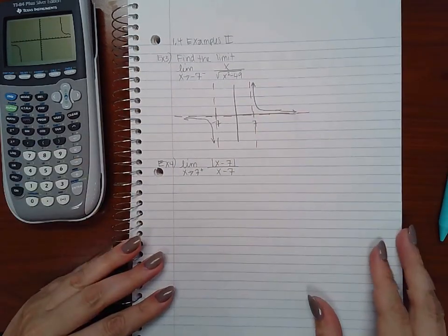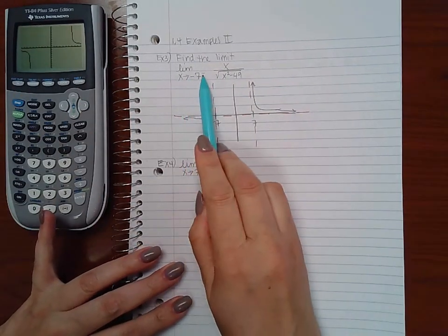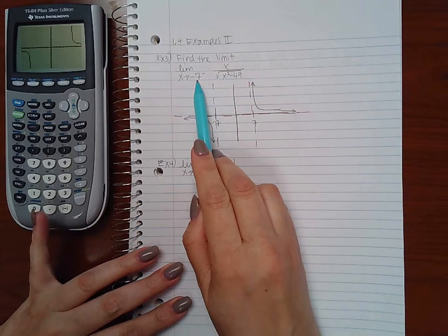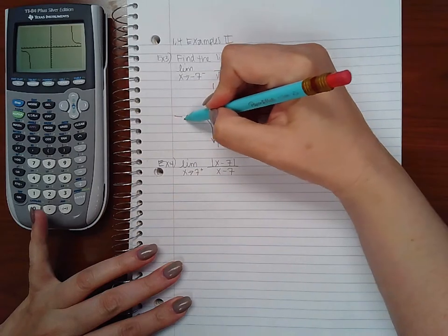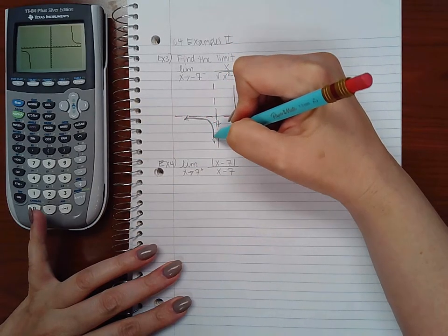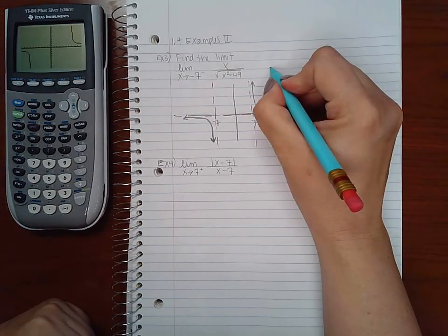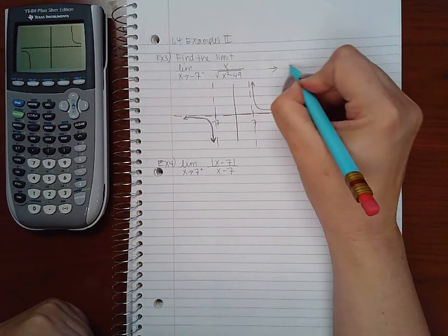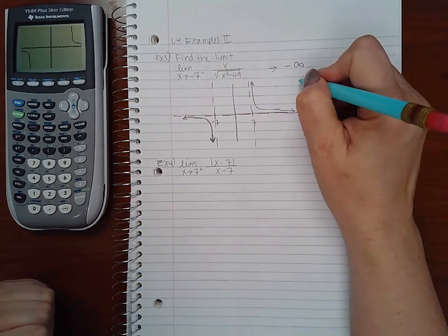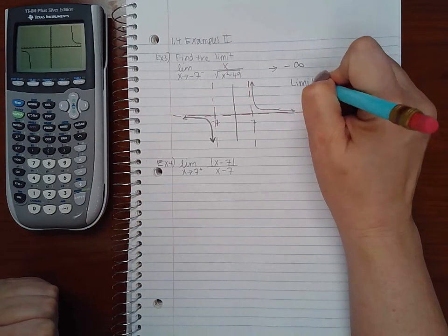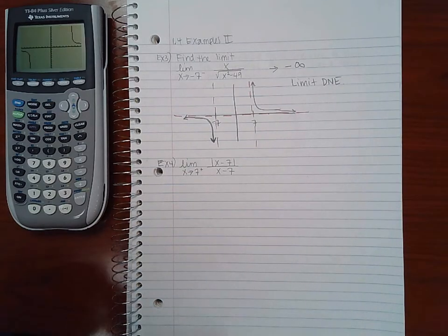That's my graph according to my graphing calculator. So if I'm looking at the limit to the left of negative 7, that means down here. If I'm looking at it here you'll notice that as I approach negative 7 from the left, this thing is going down forever, which means that this is actually going to negative infinity. Now we talked about this before - when that's happening, the limit does not exist.